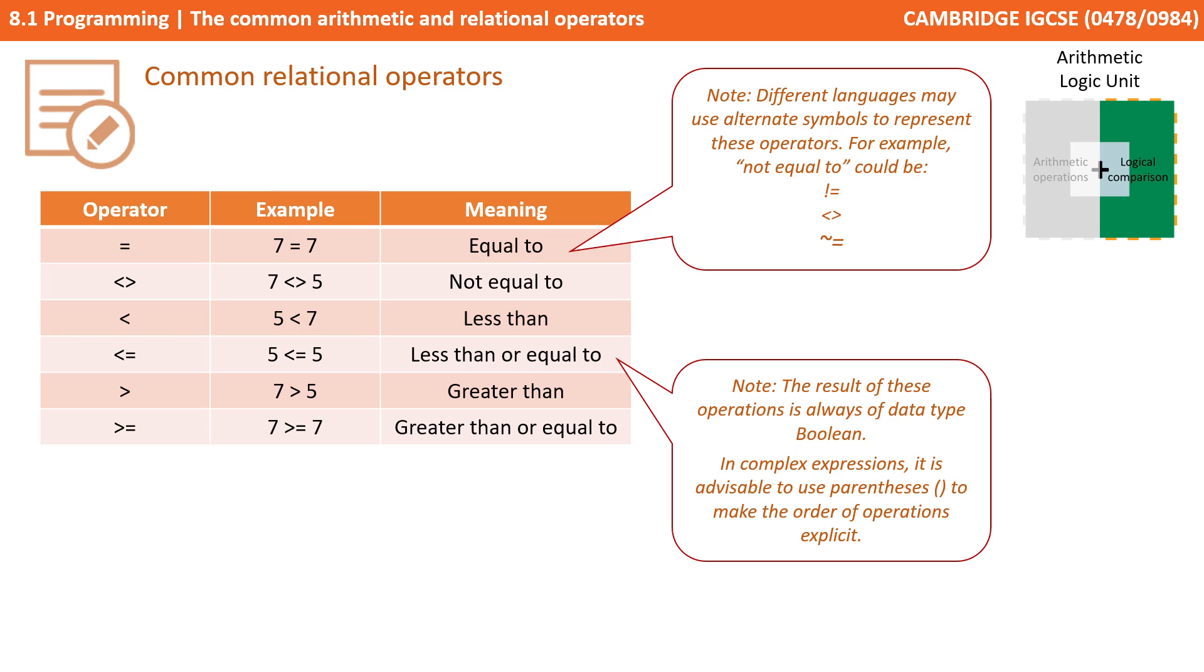Now, a couple of notes here. Firstly, different languages may use alternate symbols to represent these operators. For example, not equal to could be an exclamation mark and an equals, or greater and less than symbols, and a number of other varieties. Also note, the result of these operations is always a data type of boolean. When creating complex expressions, it's advisable to use parentheses or brackets to make the order of operations explicit.